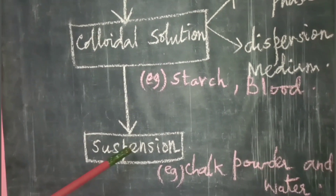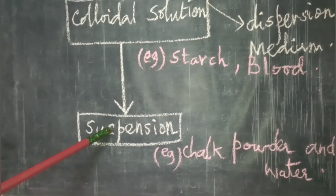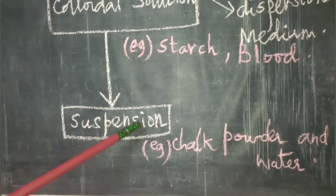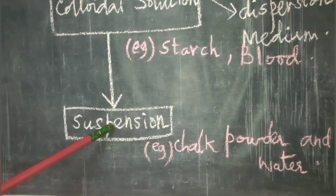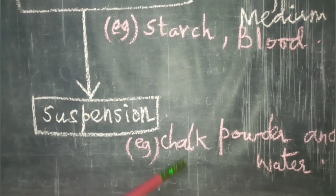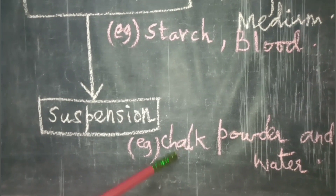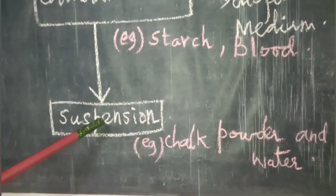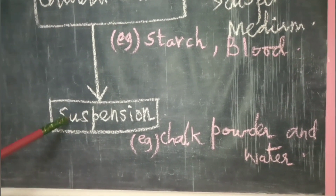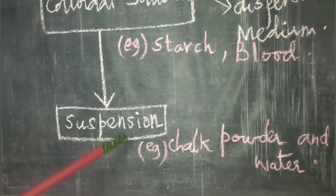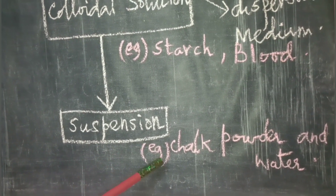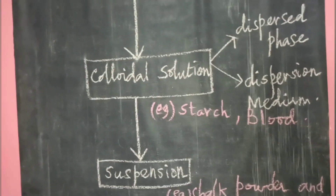The next type is suspension. Suspension is a heterogeneous mixture where small insoluble solid particles settle down at the bottom. An example is chalk powder in water — the chalk powder settles at the bottom of the beaker, and you can see two distinct phases. This is called a suspension.